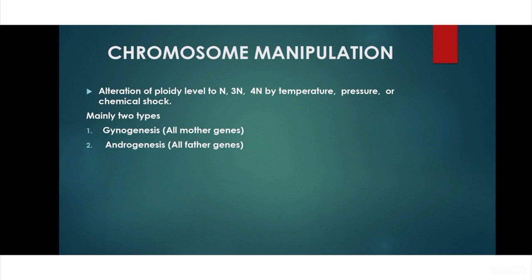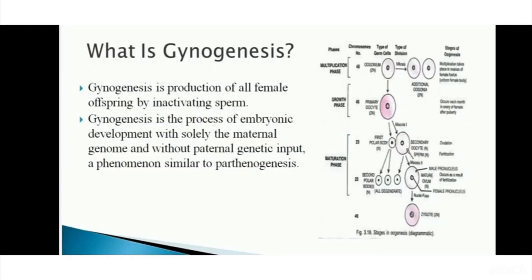Welcome to today's class. Today we will discuss chromosome manipulation. Chromosome manipulation is generally the alteration of ploidy level to haploid, diploid, or tetraploid — that means n, 2n, 3n, and 4n — by temperature, pressure, or chemical shock. We humans and fish are diploid organisms. Changing the ploidy level of such organisms using these shocks is called chromosome manipulation.